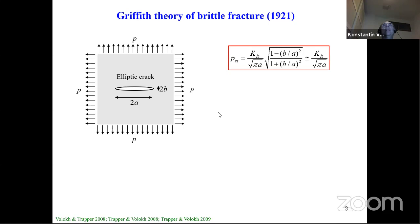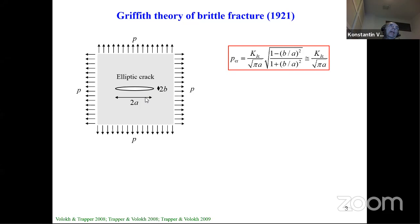The critical load — the critical hydrostatic tension — using modern notation, equals the fracture toughness (a material parameter) divided by the square root of pi times a, where a is the length of the crack. This is how we know the formula today. What Griffith actually derived was a formula involving b/a, where b is the thickness of the crack and a is the length, so b/a gives the sharpness of the crack.